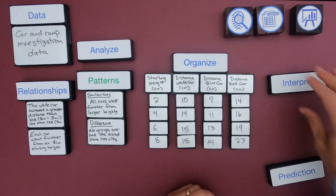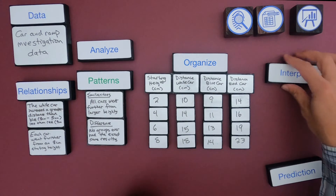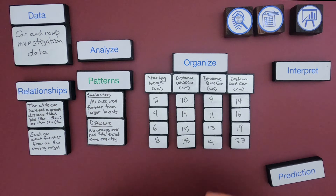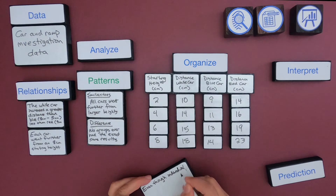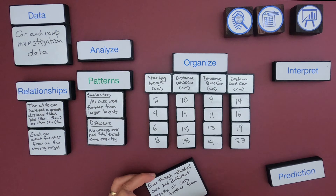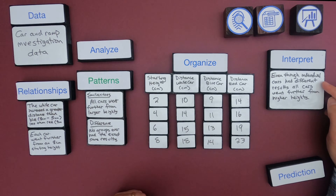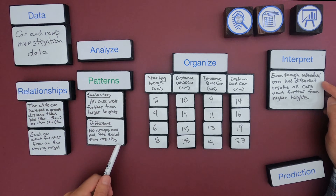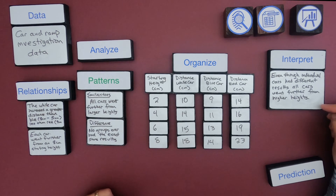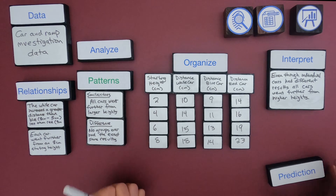The last thing I want to do is interpret the data — looking at the sum of the data. When you're analyzing, you're making sense of the data; when you interpret, you're saying what story does this data tell. The interpretation I wrote is that even though the individual cars had different results, all cars went further from a greater height — as the height increased, they went a further distance.